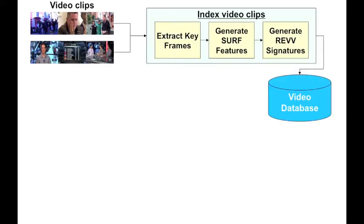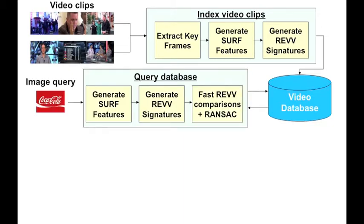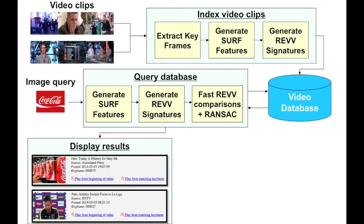Our system collects videos continuously. When a new video clip is ready, it proceeds to extract discriminative and compact rev signatures from keyframes at one frame per second and include them in the database. To serve queries, the system extracts rev signatures from the query image and performs fast matching and geometric verification. After that, results are generated and displayed.